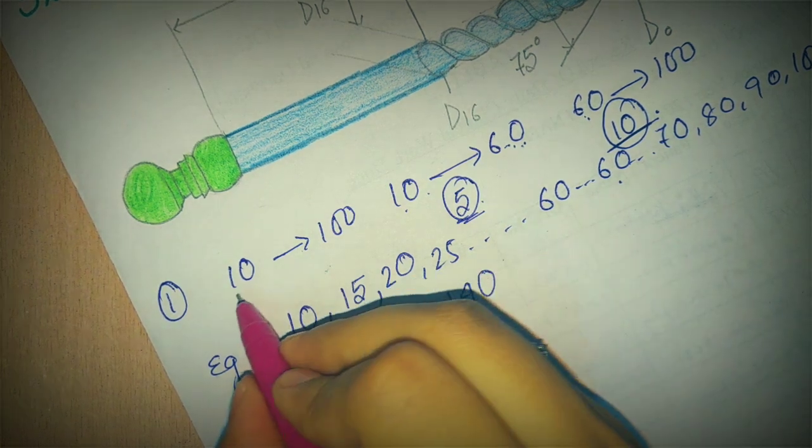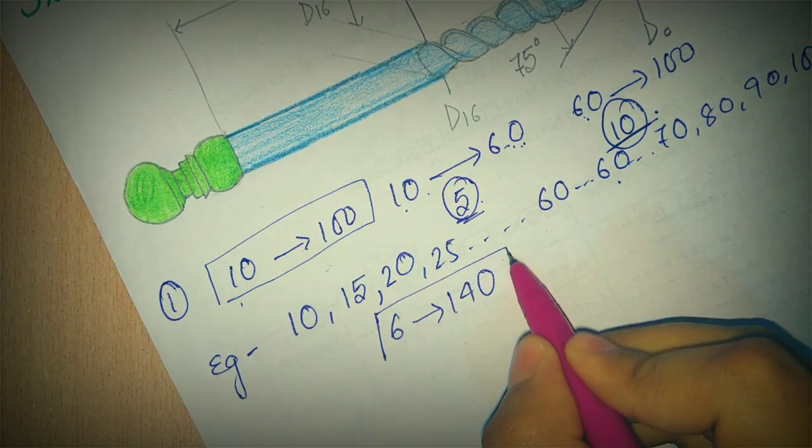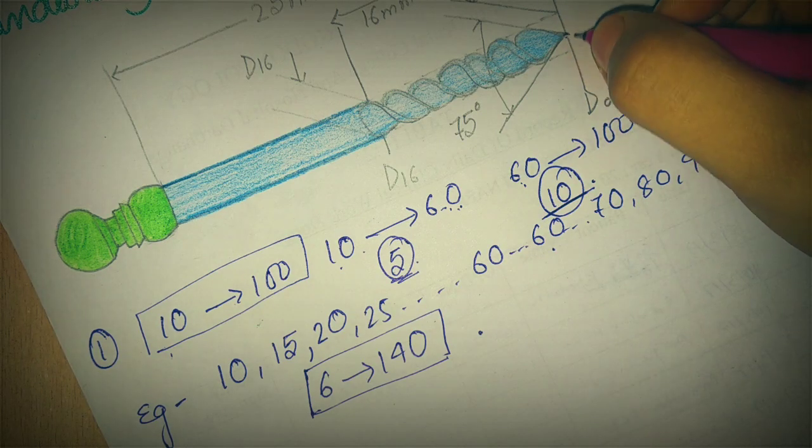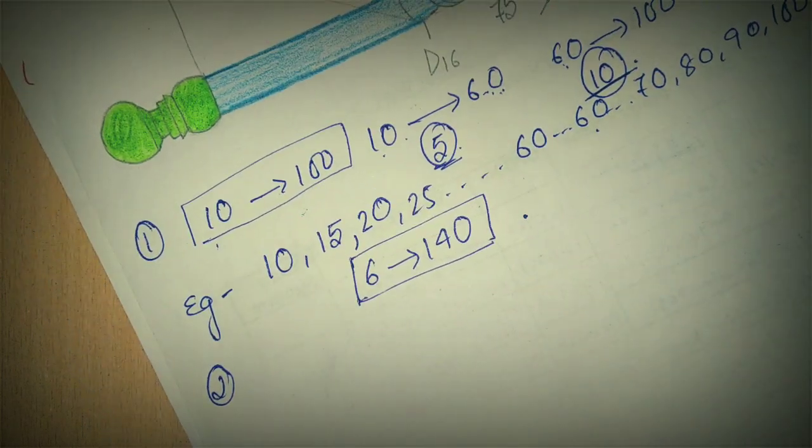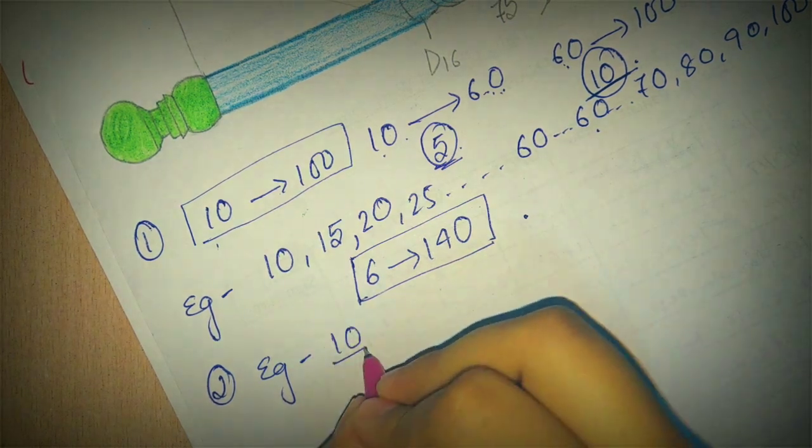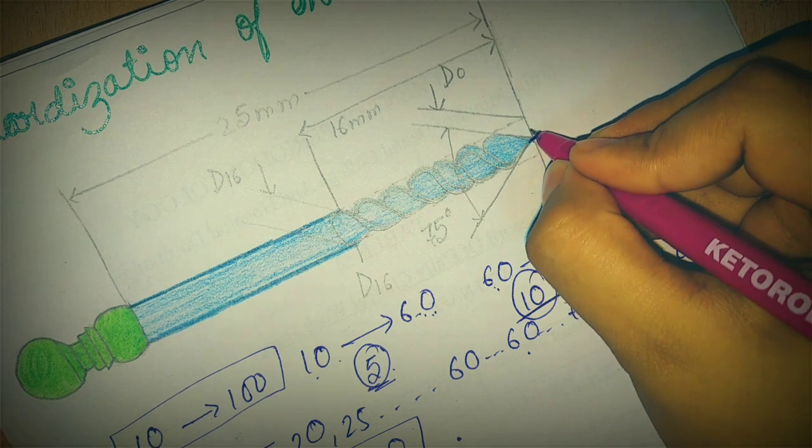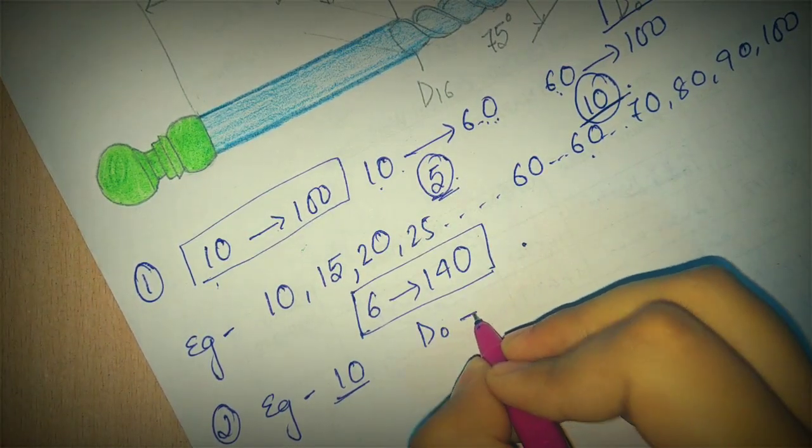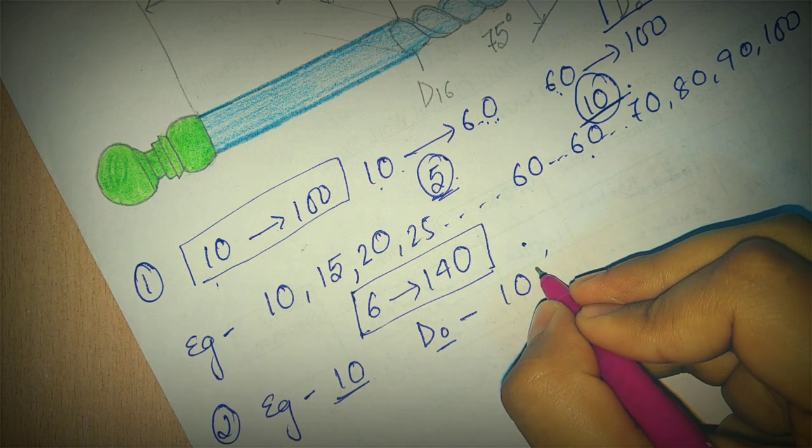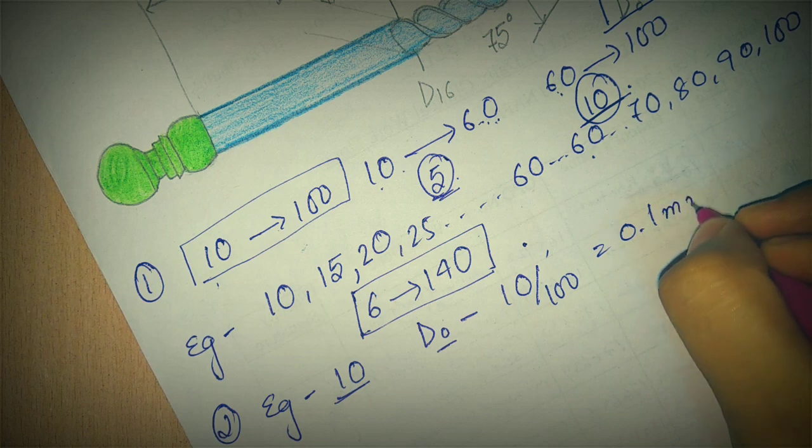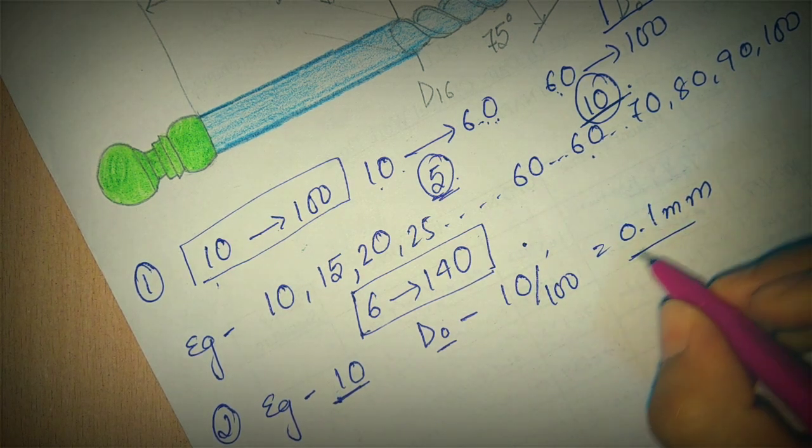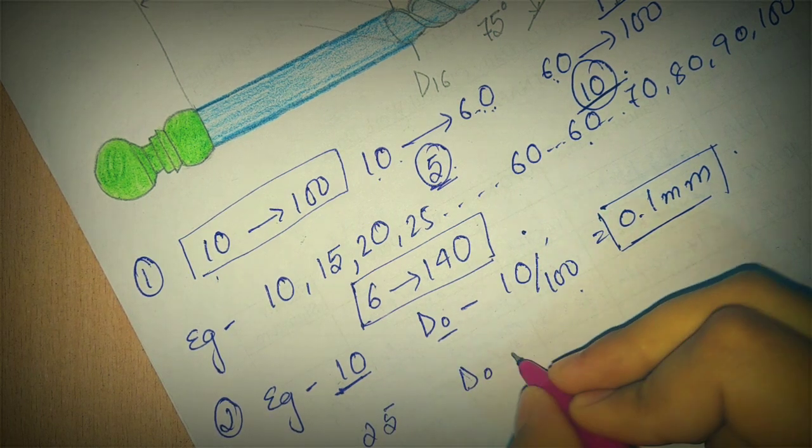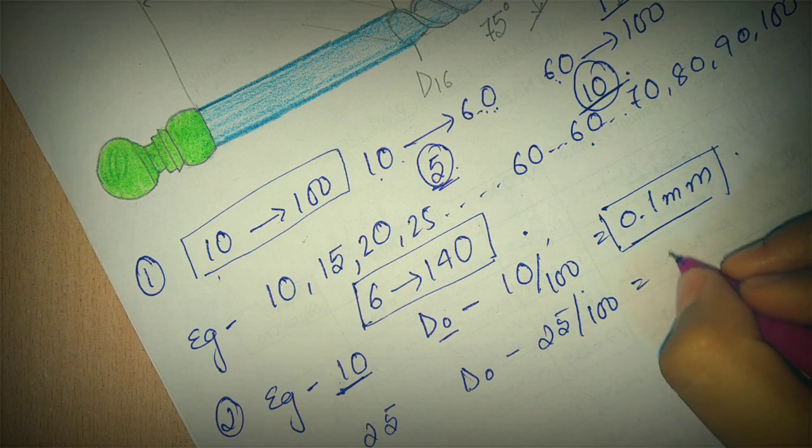Now coming to the second point. Our instrument tip, this is the tip, and this tip is denoted as D0. As you can see over here, it is D0. So D0 is the diameter at the tip. It will be 10 by 100, so it will be 0.1 mm. So this is the tip diameter. Likewise, if you go for 25 number, the D0 will be 25 upon 100, so the tip diameter D0 is 0.25 mm.